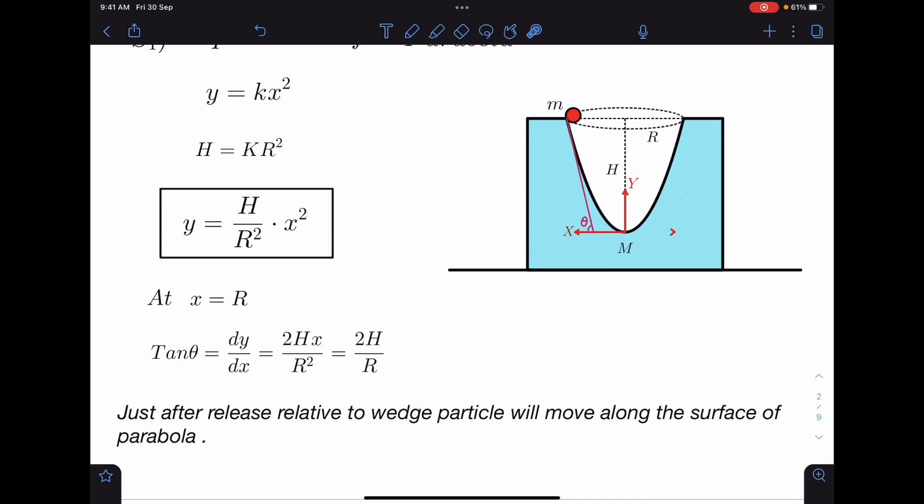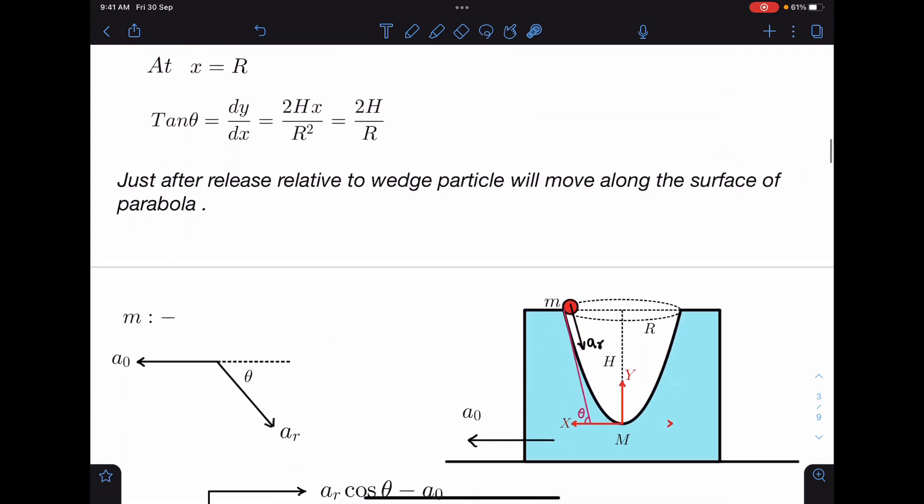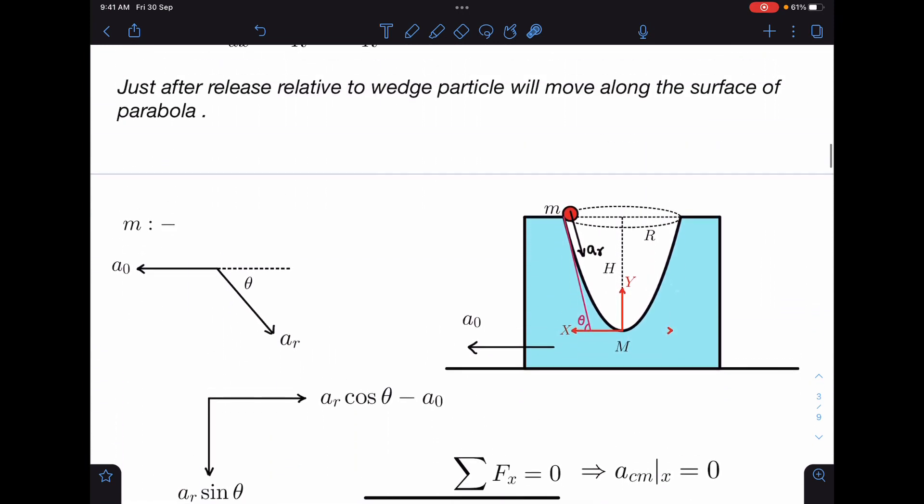Just after release, relative to the wedge, particle will move along the surface of parabola. If this wedge is at rest, that means we are observing from the frame of the wedge, then we are going to find this particle moving along this parabola only.